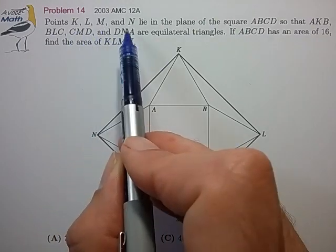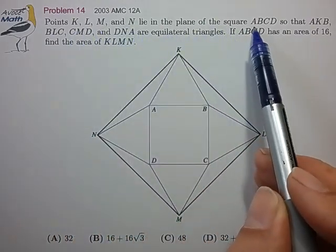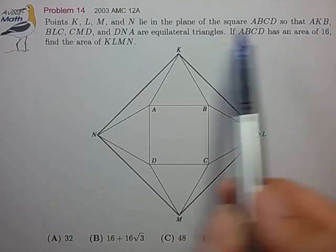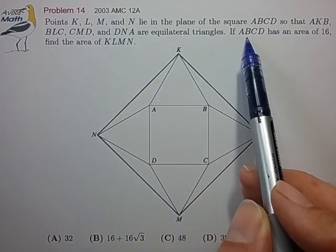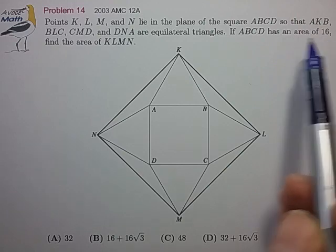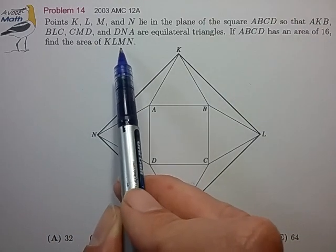We have points K, L, M, N lying in the plane of square ABCD so that the four triangles are all equilateral triangles, and if square ABCD has area 16, find the area of KLMN.